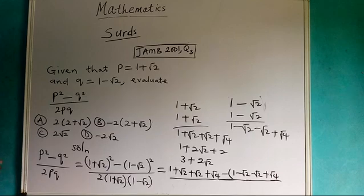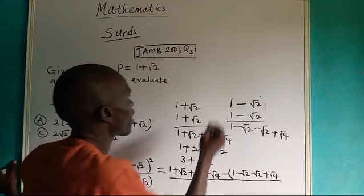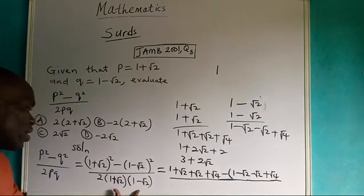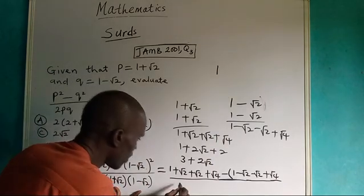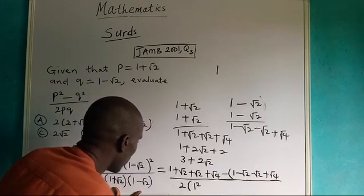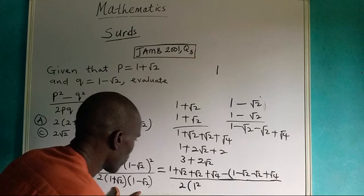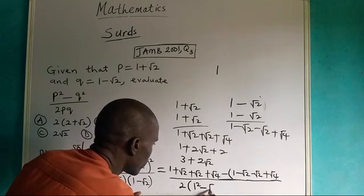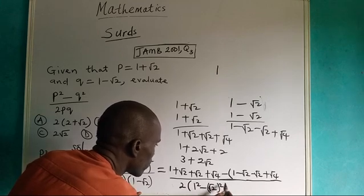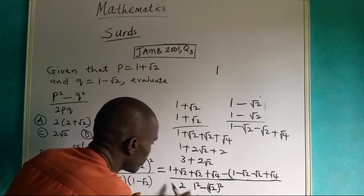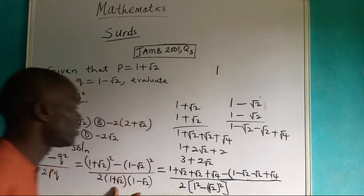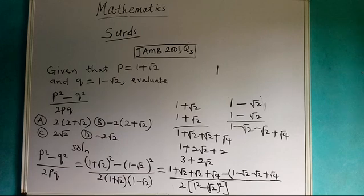Now we will consider the denominator. This one is a difference of two squares. Therefore for 2PQ I am going to have 2, and then 1 squared minus root 2 squared. That is what I have at the denominator.